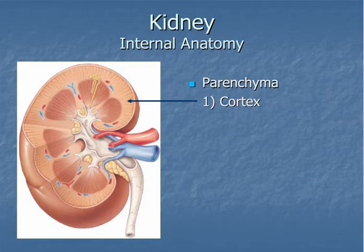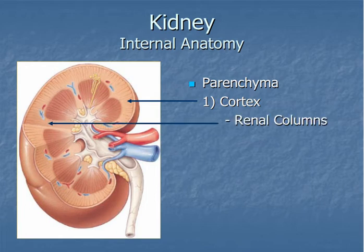Looking at the parenchyma or functional parts of the kidney: just below the capsule is the renal cortex, where some nephrons are located. Most cortical tissue is in the superficial part of the kidney, but the renal columns are cortical tissue that delves deep into the kidney's interior. They tend to be lighter in color than the medullary tissue.